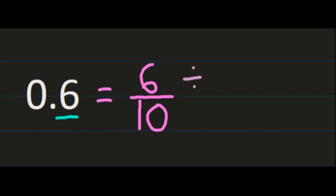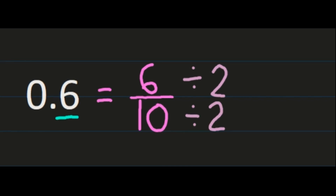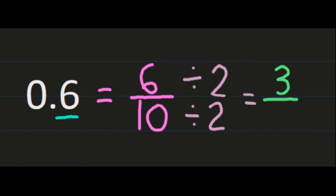However, 6 tenths can be simplified, and if your fraction can be simplified, you want to do that. 6 and 10 share a common factor of 2. So 6 divided by 2 is 3, and 10 divided by 2 is 5. So 6 tenths is equal to 3 fifths.